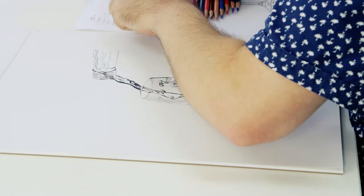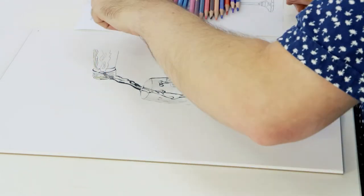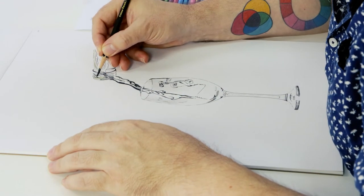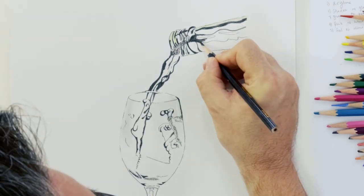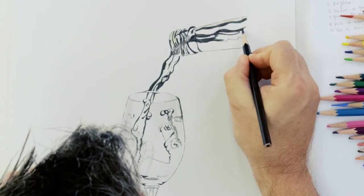We can then lay our dark tones in with the black colored pencil. We add this tone to the shadows in the bottle, the edges of the trail of wine coming out of the bottle, the dark areas of the wine in the glass, and the edges of the glass.